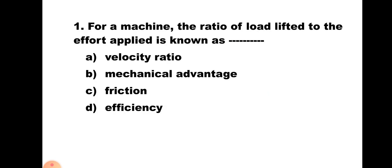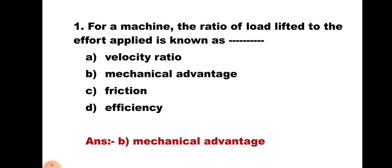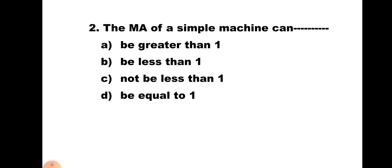Question number 1: For a machine, the ratio of load lifted to the effort applied is known as — A) velocity ratio, B) mechanical advantage, C) friction, and D) efficiency. You know that this is the definition of mechanical advantage, hence the correct answer is B) mechanical advantage.